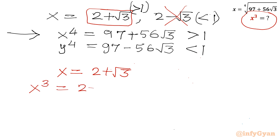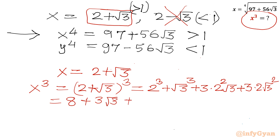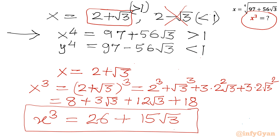x cube equals (2 plus root 3) whole cube. Applying the formula (a plus b) cubed equals a cubed plus b cubed plus 3a squared b plus 3ab squared: 2 cubed is 8, root 3 cubed is 3 root 3, plus 3 times 4 gives 12 root 3, and 6 times 3 gives 18. So the final answer is x cube equals 8 plus 18 plus (3 root 3 plus 12 root 3) equals 26 plus 15 root 3.